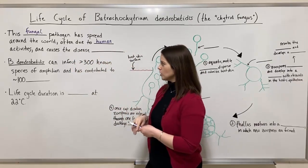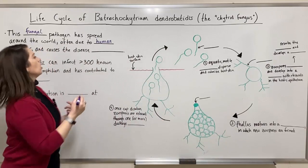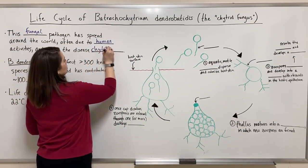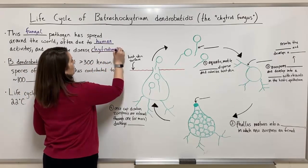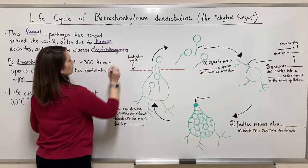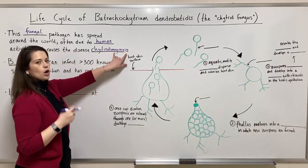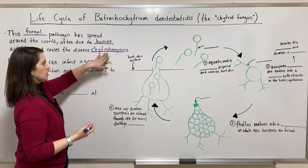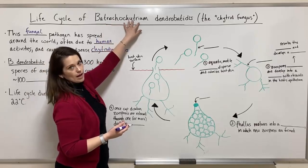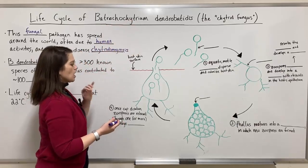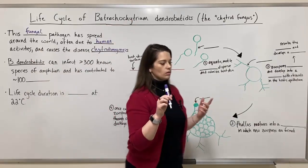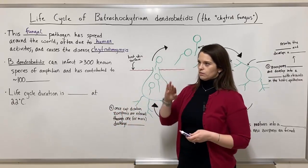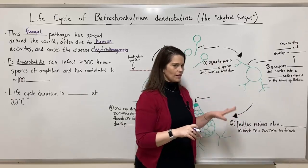It causes a disease called chytridiomycosis. Any mycosis is a disease caused by a fungus, and this is a fungal disease caused in particular by this Batrachochytrium — that chytrid fungus. There are some closely related species, like Batrachochytrium salamandrivorans, which is again related and has a similar life cycle.